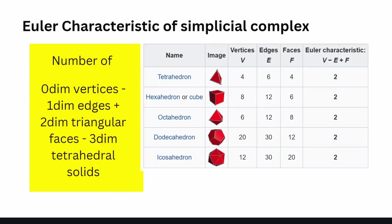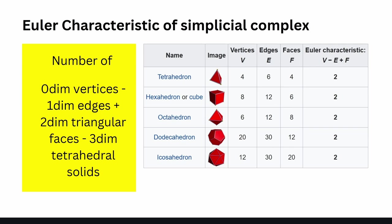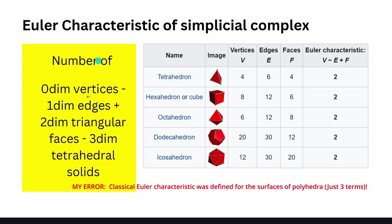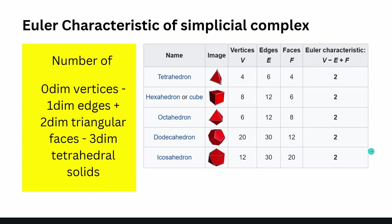One number you might encounter is the Euler characteristic of simplicial complexes. It's a simple number: take the number of zero-dimensional vertices (nodes), minus the number of edges, plus the number of triangular faces — and that is your Euler characteristic. For the tetrahedron with four vertices, six edges, and four faces, the Euler characteristic is two.